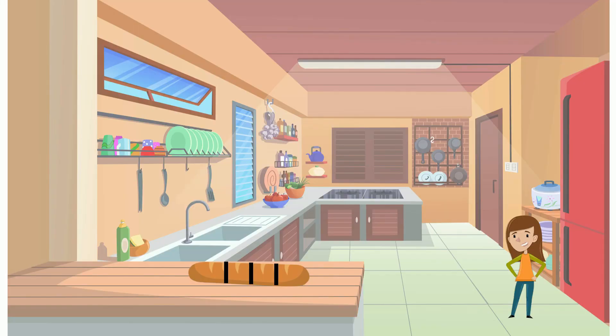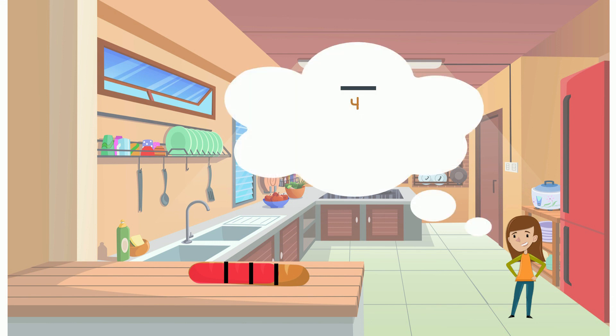A breadstick is divided into four equal parts and Ronelle is to select three of the four parts. The four equal parts will be our denominator while the three selected parts will be our numerator. The fraction that the three selected parts represent is three out of four, or three quarters.